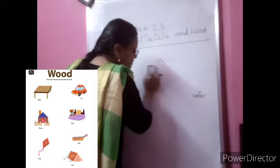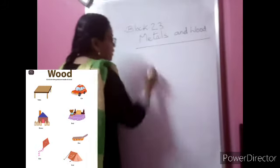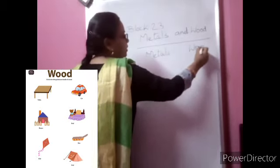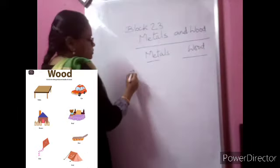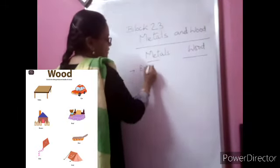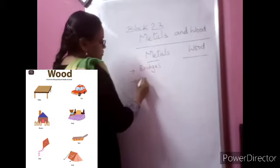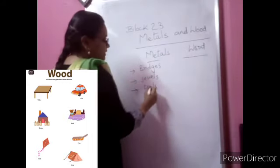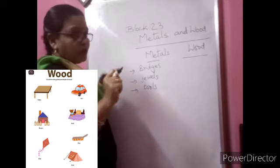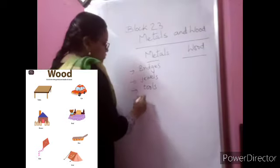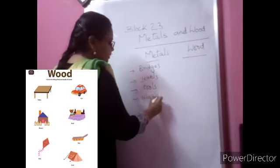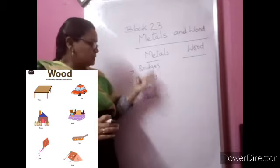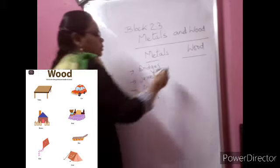So by now you know the properties of both metal and wood, and how they are used accordingly. Metals are used to make bridges because they are very strong and hard. They are used to make jewels because they are shiny. They are used to make tools like hammers because they are heavy and strong. And they are used to make utensils because they pass heat properly — so the food gets cooked well.